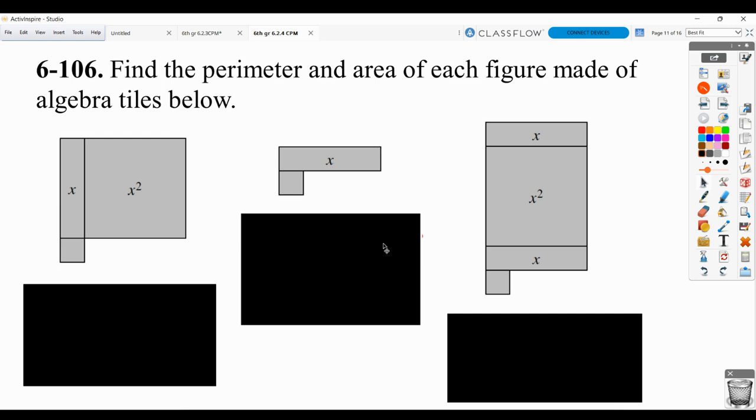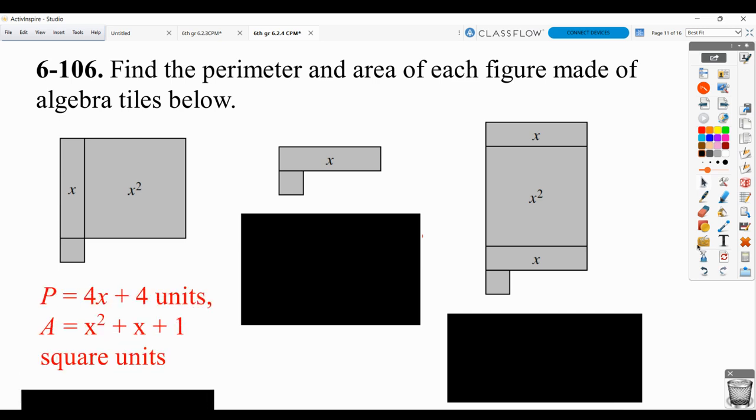The area is actually a bit easier, and let me explain why. Because we name these shapes based on their area. This square has an area of x to the second power, so we call it x squared. This rectangle has an area of x, so we call it the x tile. And this has an area of 1, so we call it the 1 or the unit tile. So the area is just x to the second power plus x plus 1.